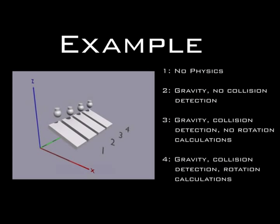Here's an example of how objects would work if no physics, or only partial physics, existed.